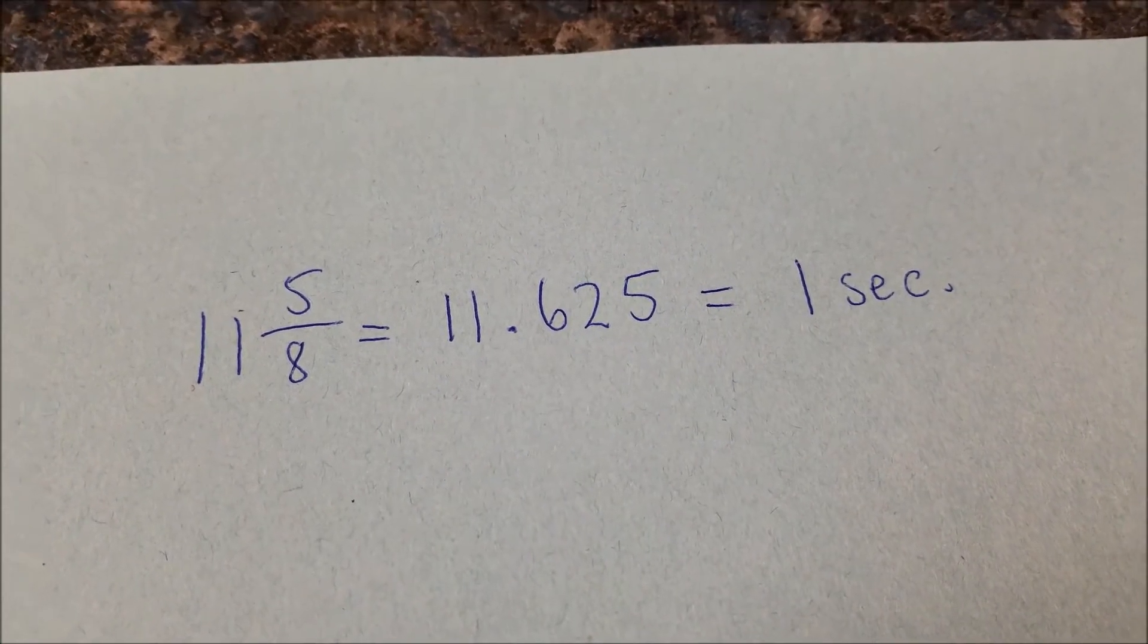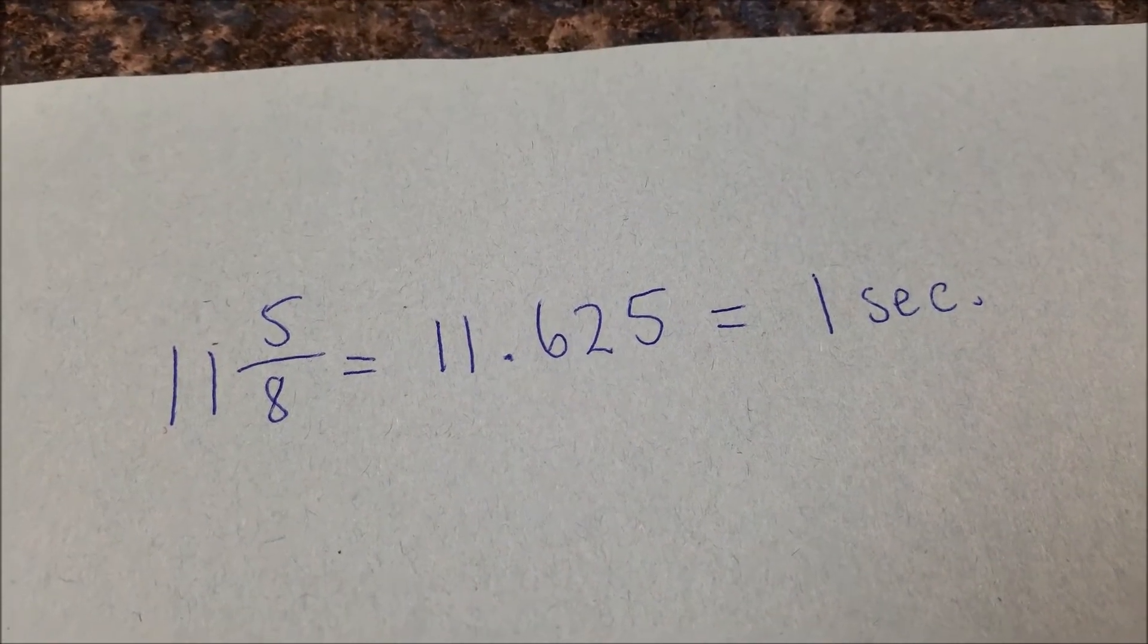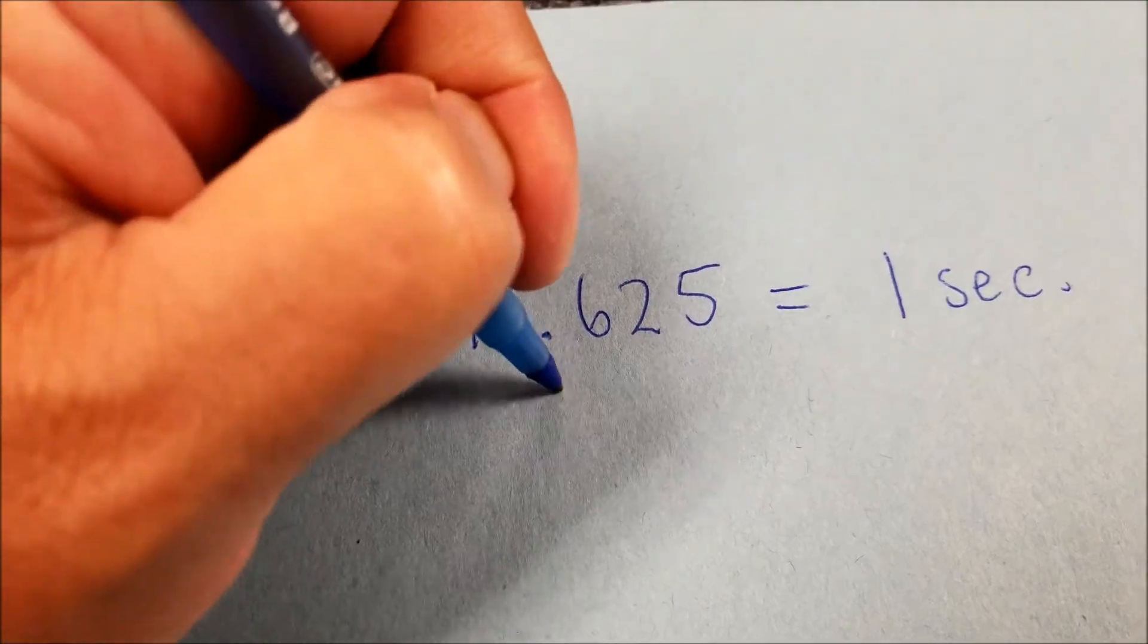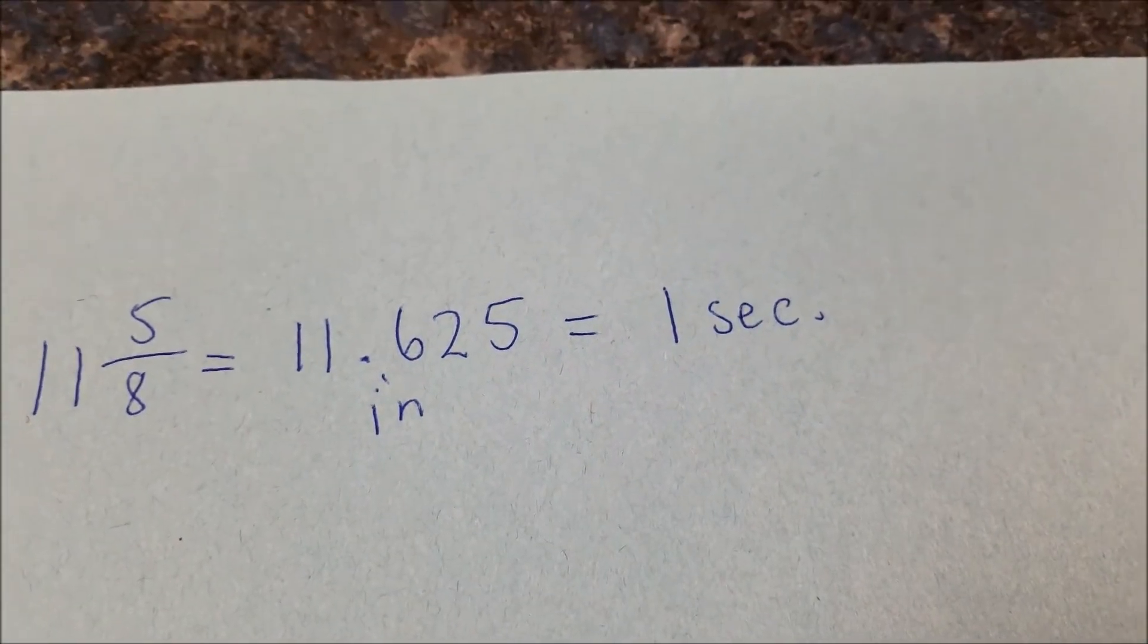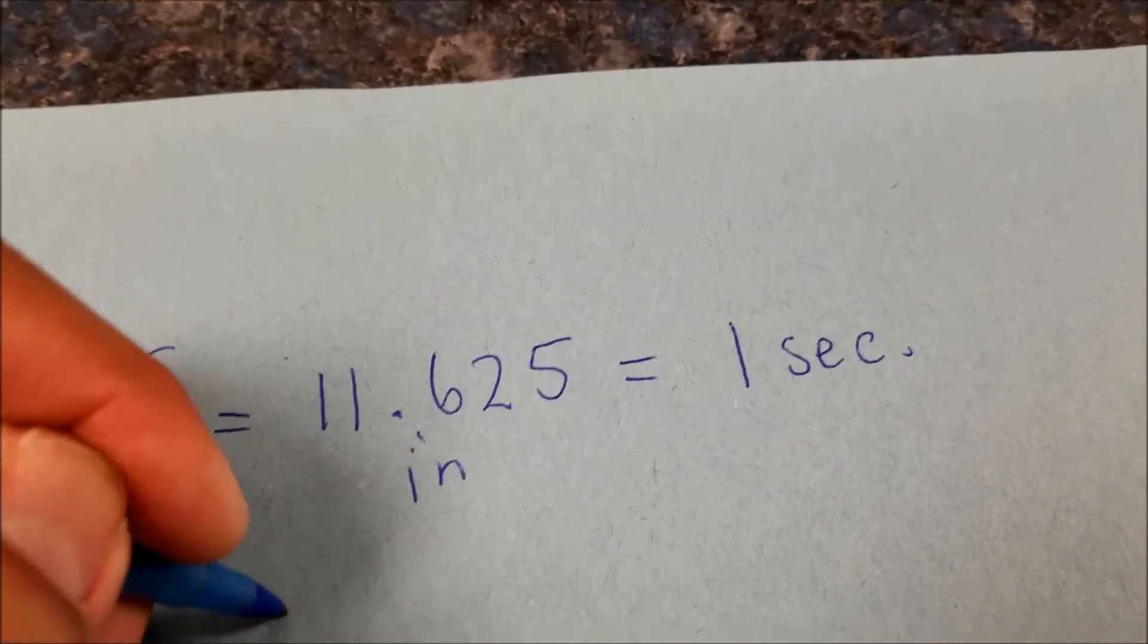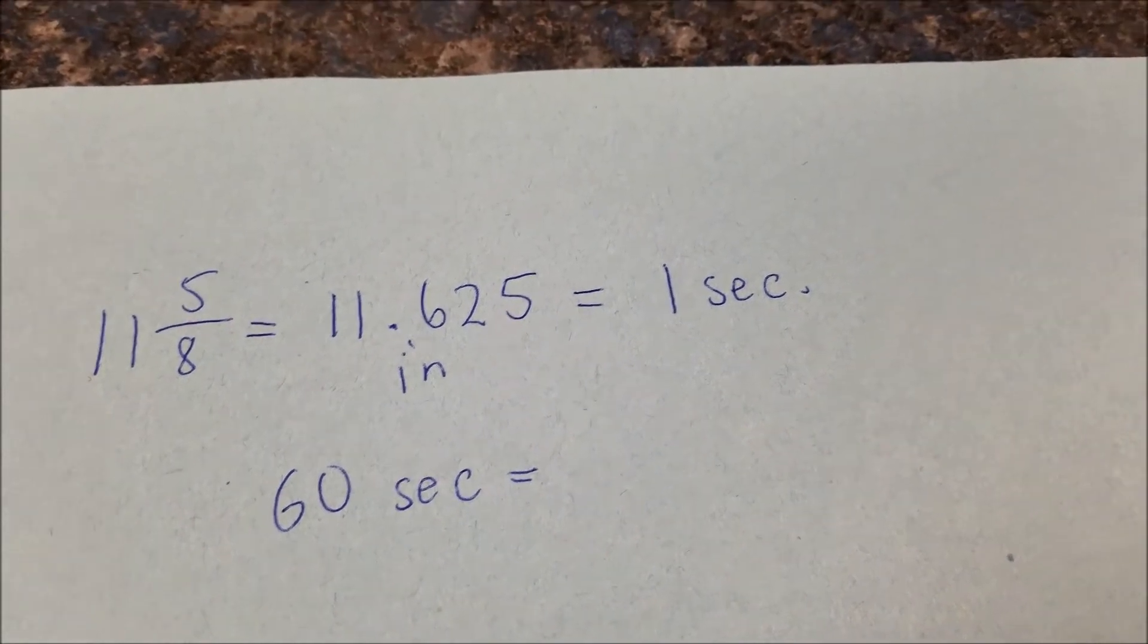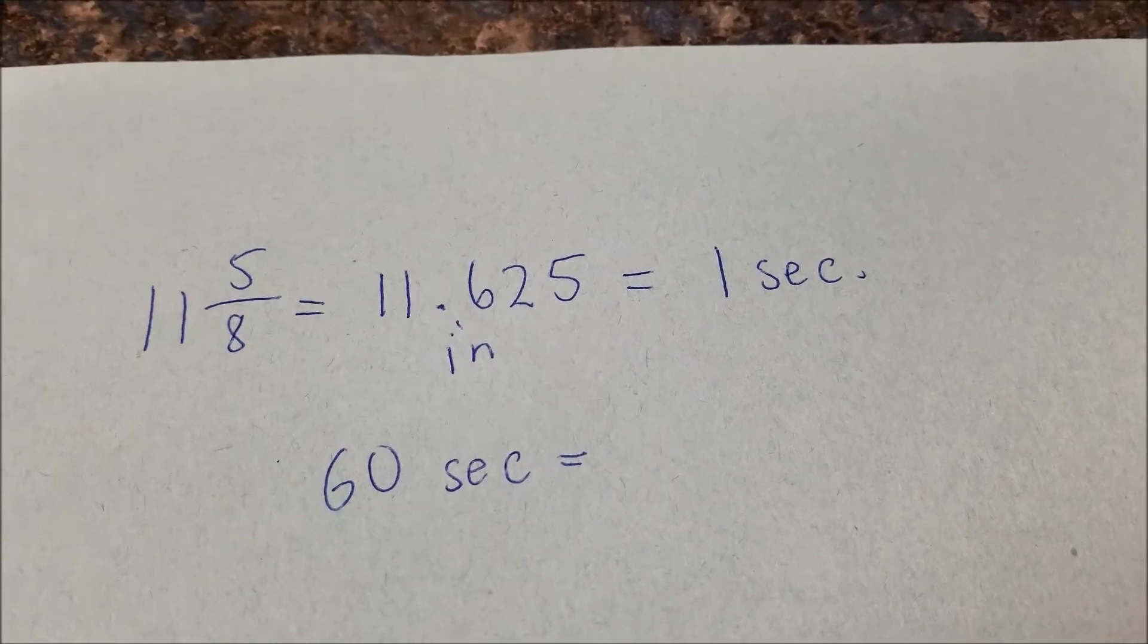Okay, so you're at Mr. Hino's math desk here where I swap hats and we're going to do everything mathematically here. So we got 11 and 5 eighths inches, which I convert to 11.625. And that would be inches in one second. So now let's go ahead and convert that. How would that be for a minute? So if we have 60 seconds, now let's go ahead and convert that to what that would be for a minute. So I'm going to be back. I'll just multiply 60 by 11.625.